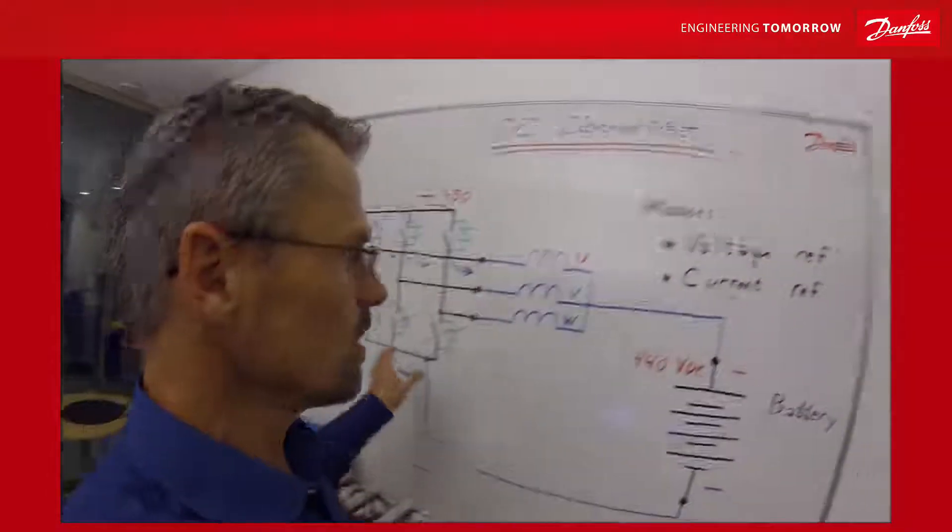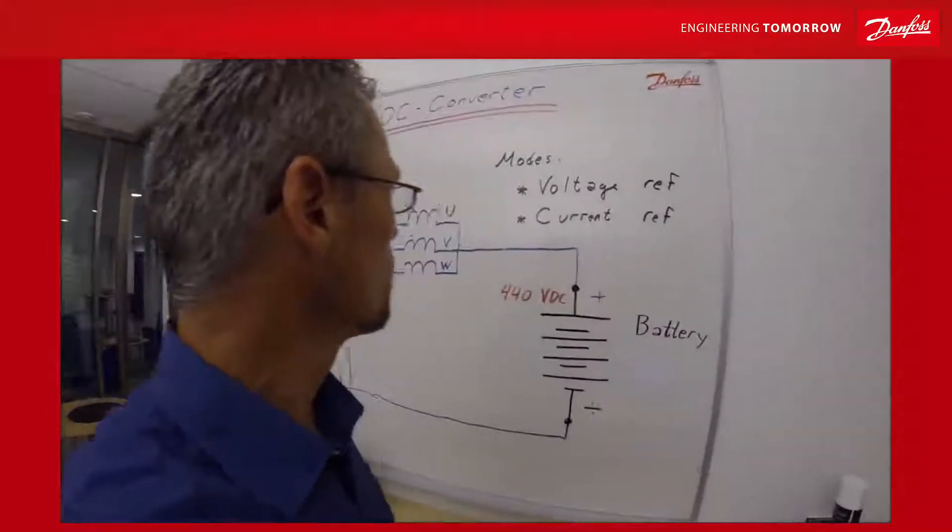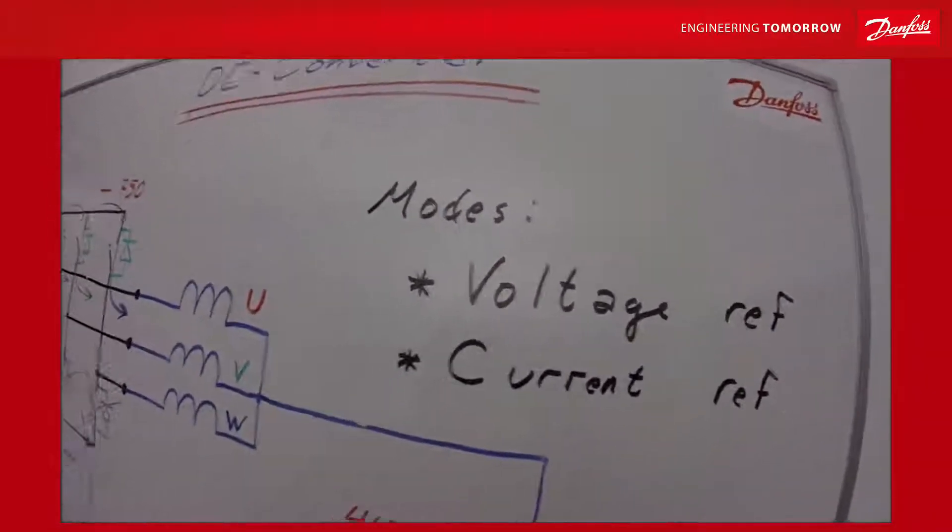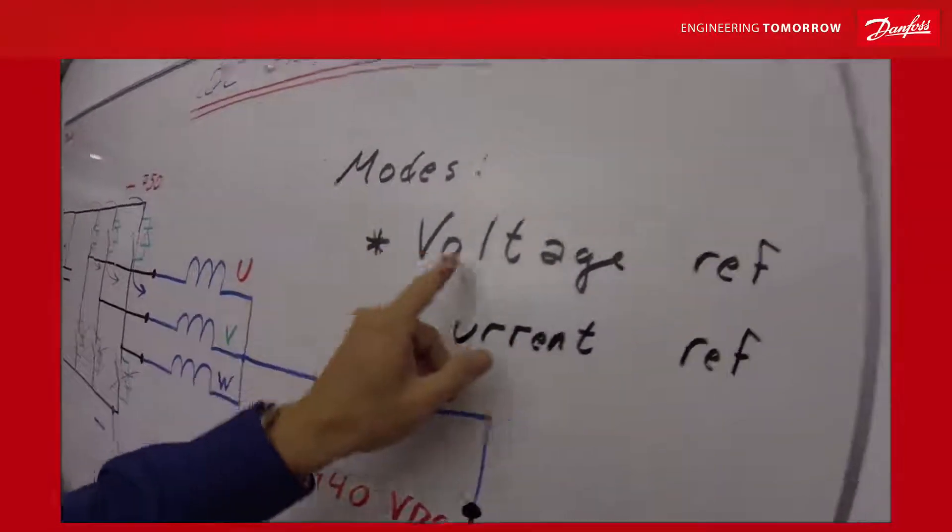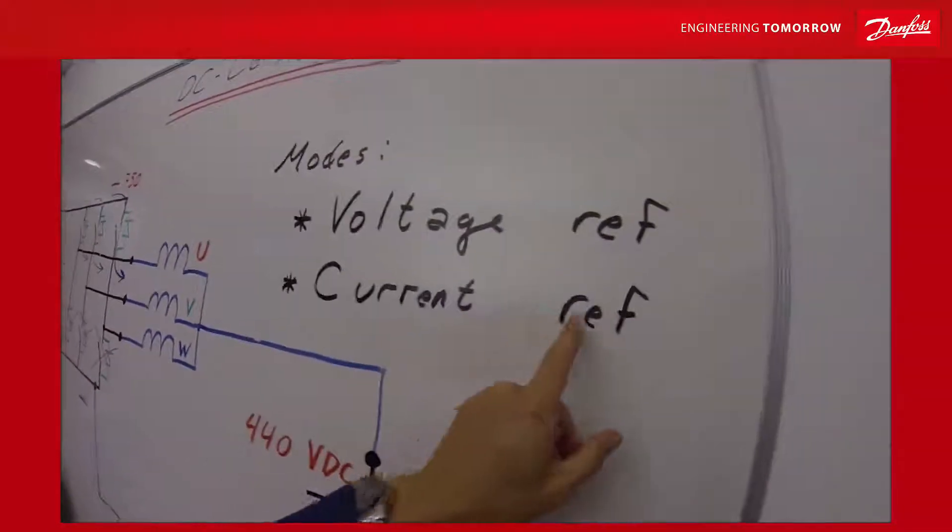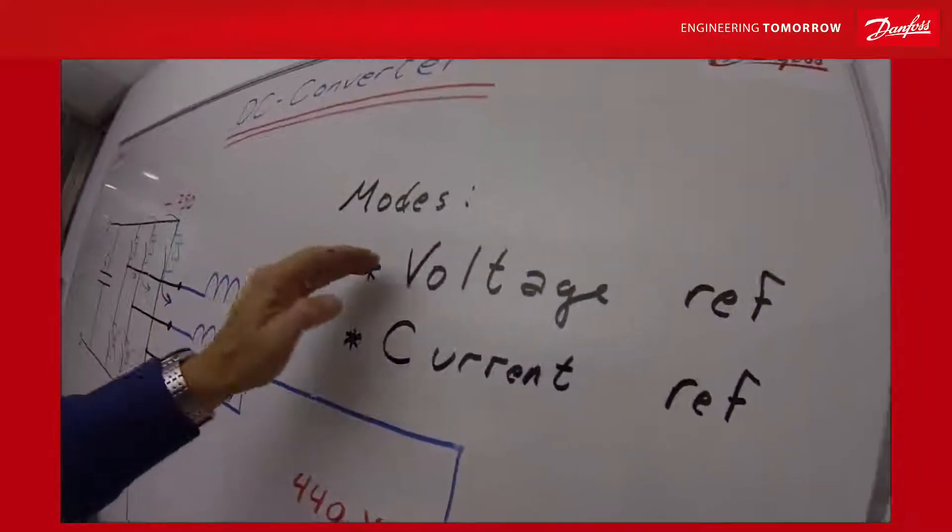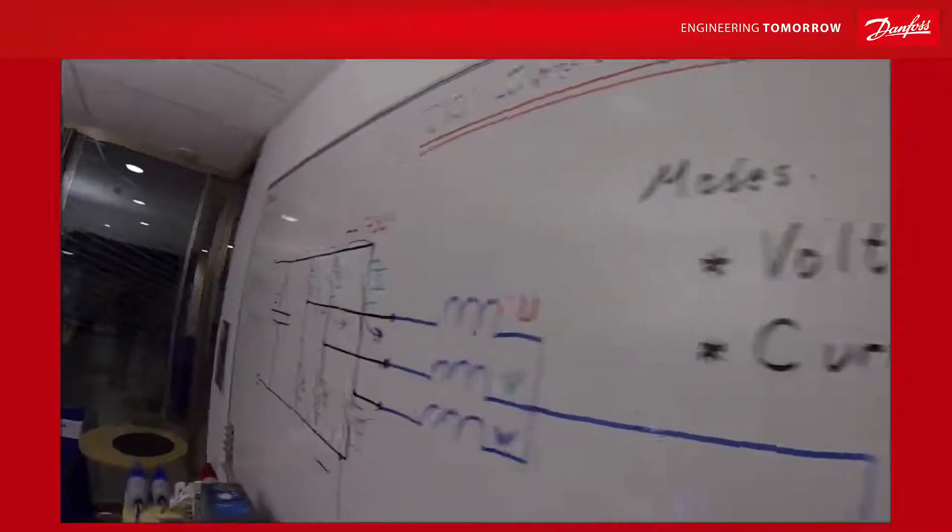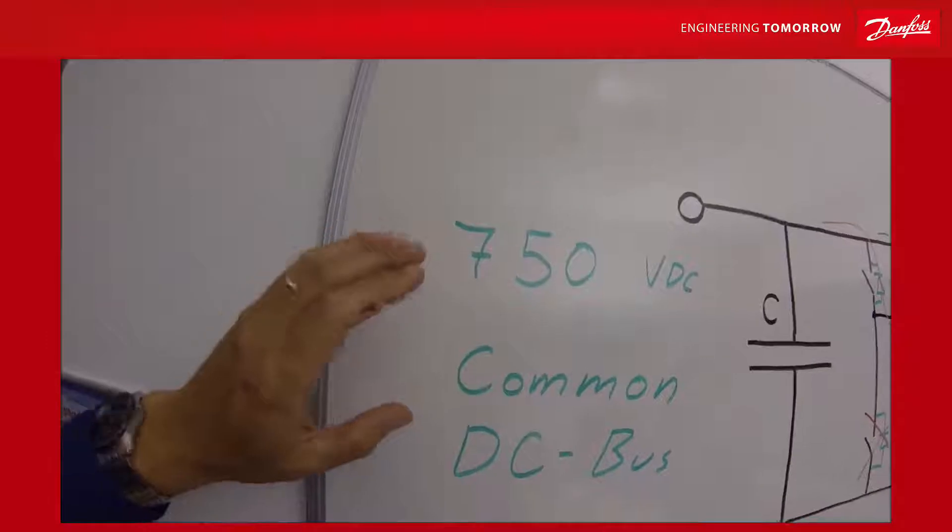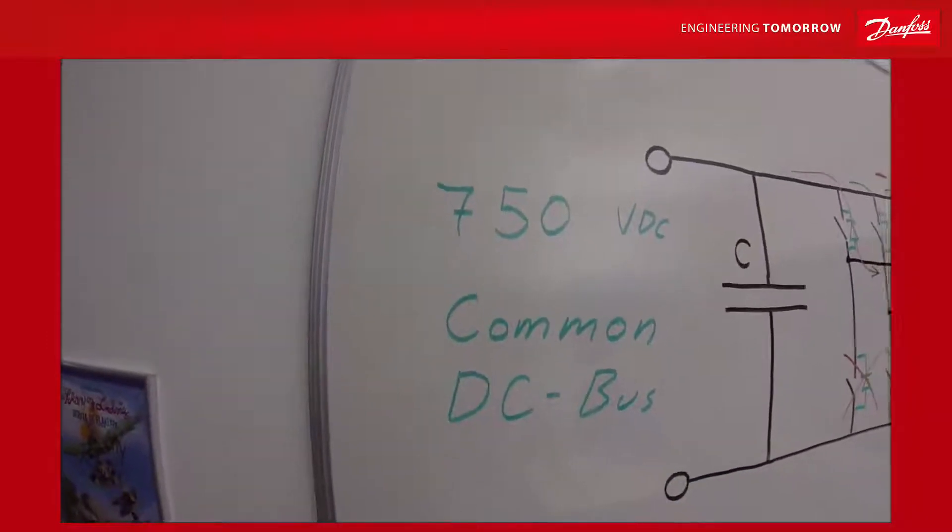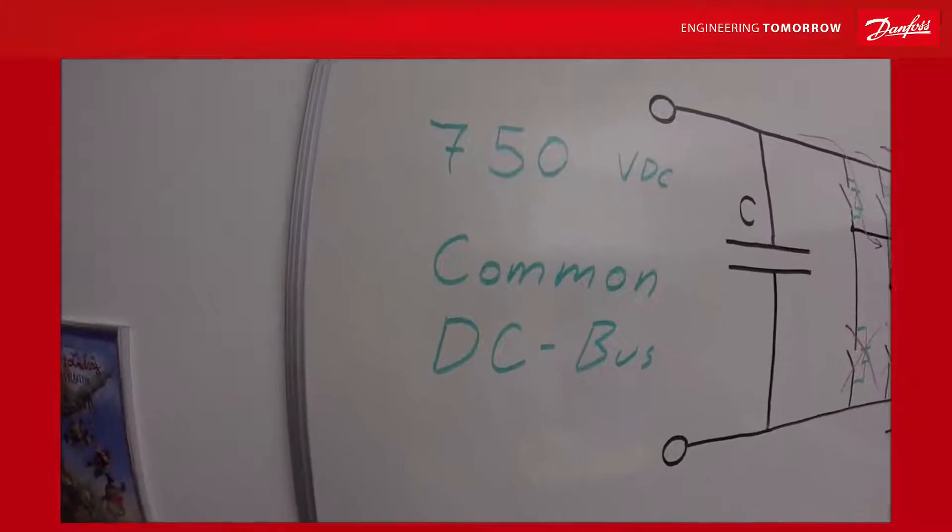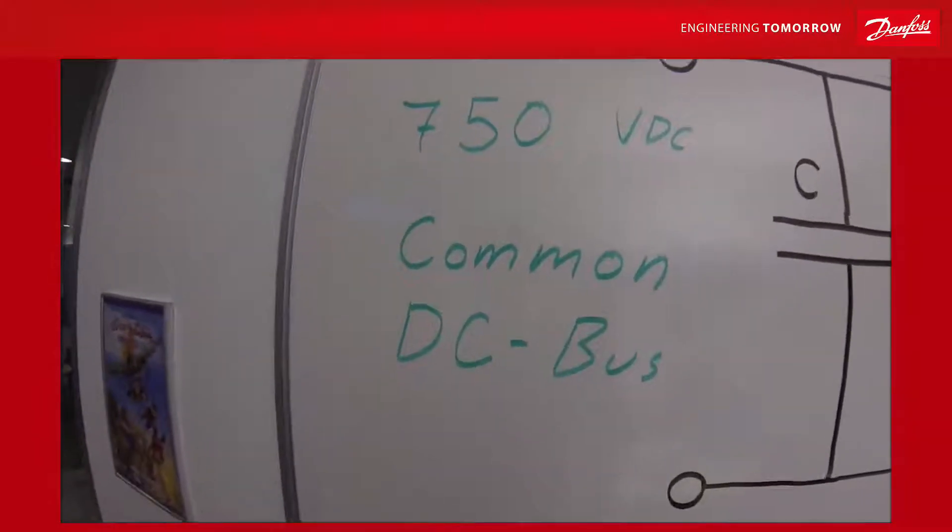Now that we have seen how the DC converter works, how to control it? You can control it in two modes. One is voltage reference mode and the other one is current reference mode. When you run it in voltage reference mode, you basically aim to produce this common DC bus voltage. You also have a drooping involved so that you can share the load with other energy producers like Active Front End.